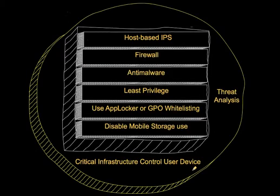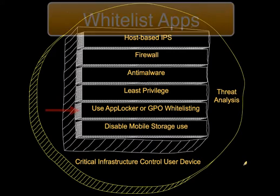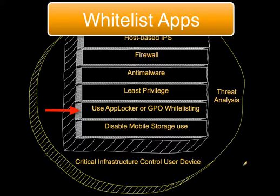Now let's look at logical and administrative controls. We start with disabling mobile storage use. We also block users from installing or running unapproved applications. This is easily done on Windows systems by using AppLocker or setting up software restriction policies and GPOs. Whenever possible, use AppLocker, as software restriction policies configured as a GPO have one or two weaknesses not shared by AppLocker.